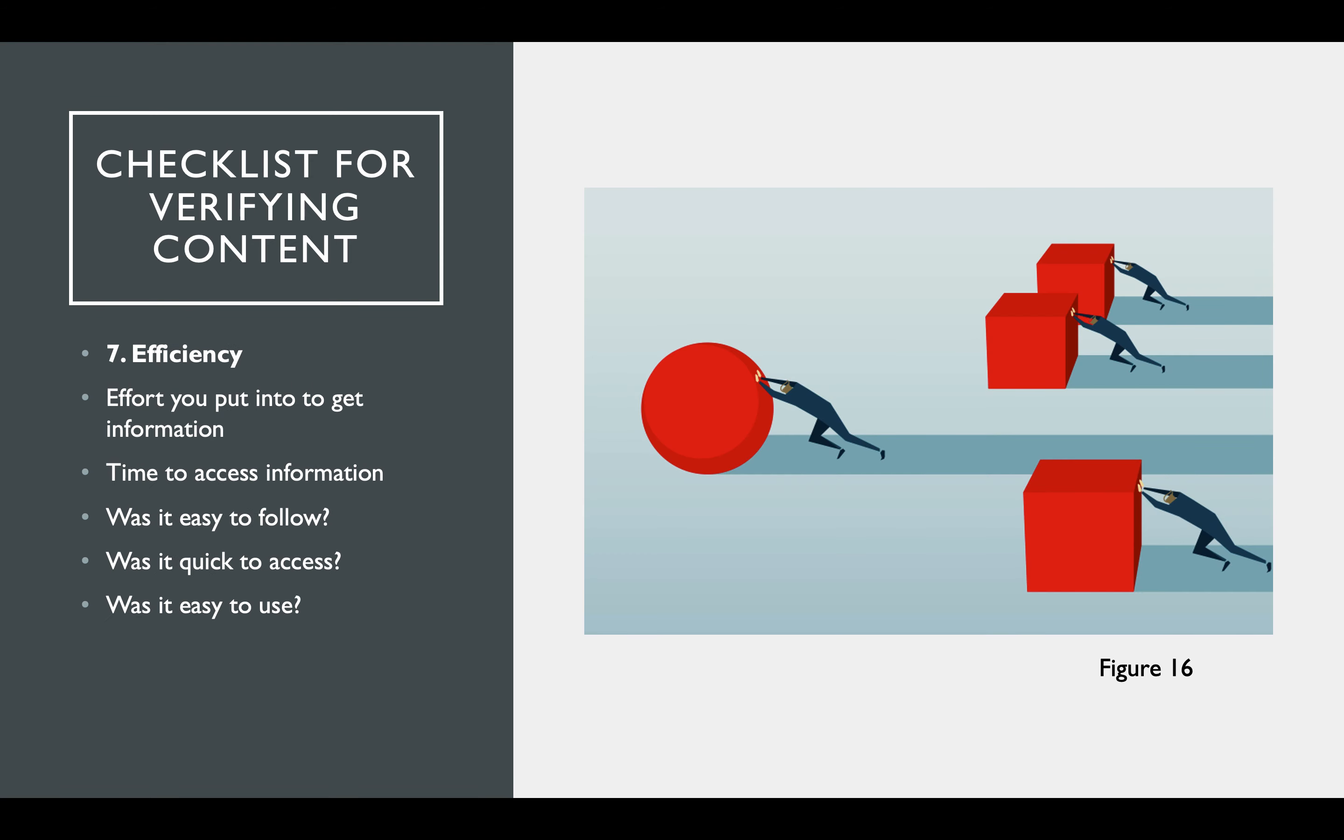Efficiency. The effort you put into getting the information, time to access information. Was it easy to get access to this site? If it wasn't, that might mean that there's a lot of things going on. If you have to click on this link to get to this thing and then you can get the article, there might be a fake site at play here.